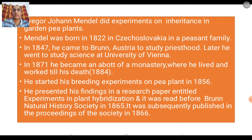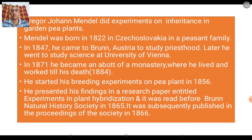He compiled all his findings and published them as a research paper entitled 'Experiments in Plant Hybridization.' It was read before the Brno Natural History Society in 1865 and subsequently published in the proceedings of the society in 1866.